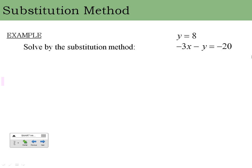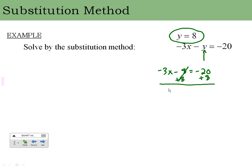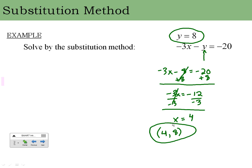Here's an easier example: if y equals 8 and we have another equation, they've practically told us half the answer. I plug y equals 8 into the equation: negative 3x minus 8 equals negative 20. Adding 8 to both sides gives negative 3x equals negative 12. Dividing by negative 3 gives x equals 4. So the solution is the point (4, 8). That's the substitution method — you take what one variable equals and substitute it into the other equation.